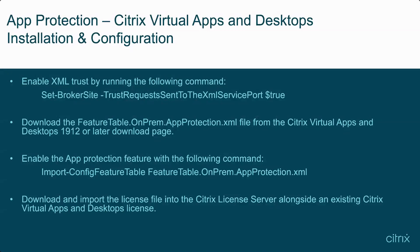Next, we need to enable the App Protection feature with the following command on the Delivery Controller for the Citrix Virtual Apps and Desktops site. Finally, we need to download and import the license file for App Protection onto the Citrix License Server alongside an existing Citrix Virtual Apps and Desktops license.